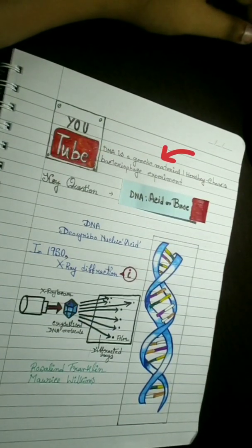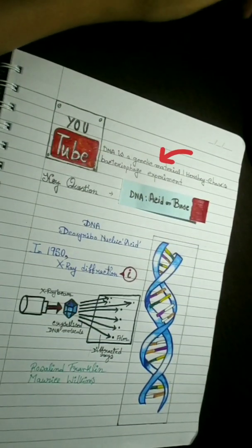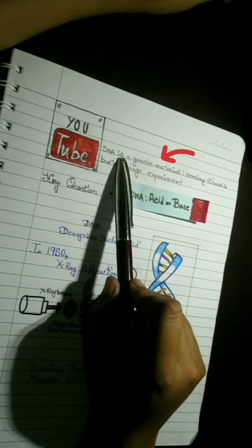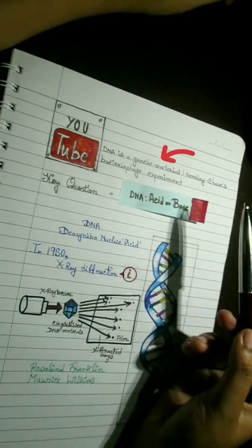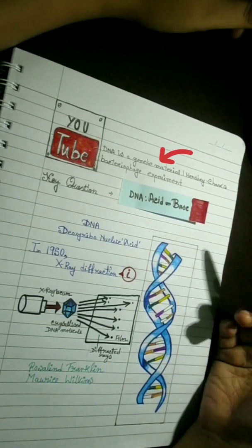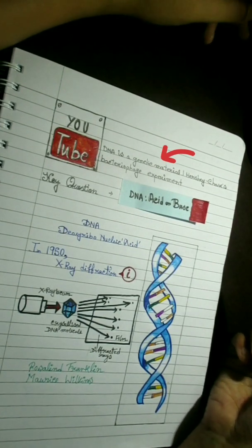From the last class, we learned that DNA is a genetic material, proved by Hershey-Chase's bacteriophage experiment. We have learned that DNA contains phosphorus in its configuration, which differs it from protein component.